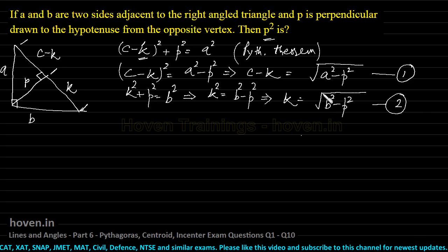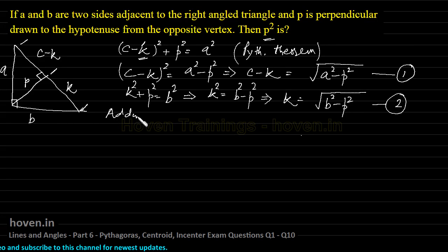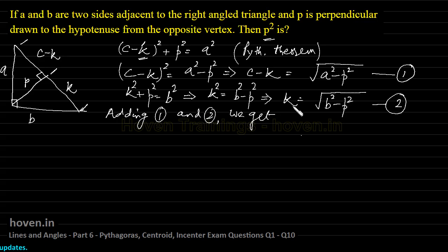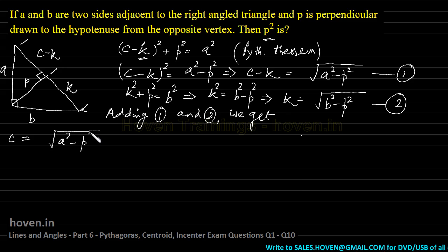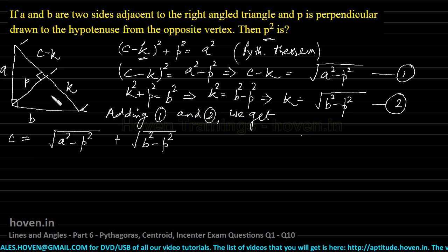Adding equations 1 and 2, k and minus k cancel, leaving c equals the square root of A squared minus P squared plus the square root of B squared minus P squared. This equation has no k. To remove c, we know c squared equals A squared plus B squared, so we square both sides.